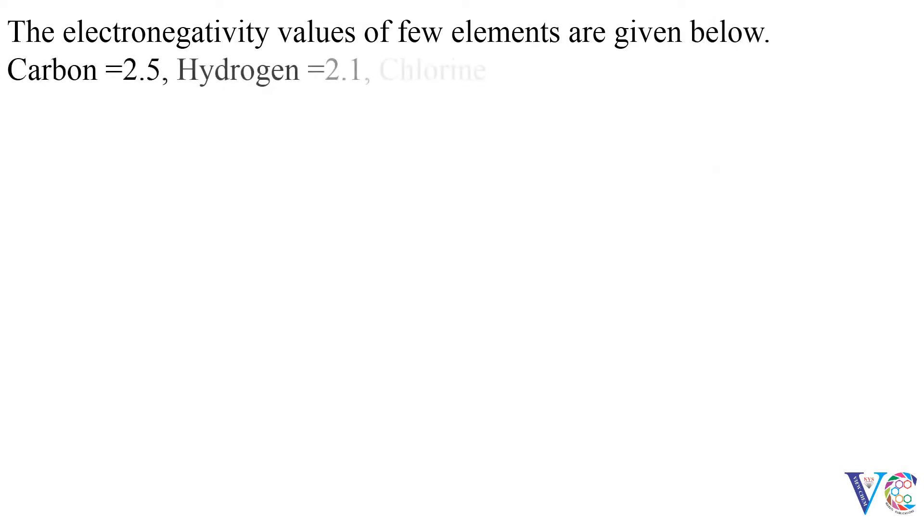The electronegativity values of few elements are given below. Carbon: 2.5, Hydrogen: 2.1, Chlorine: 3.0, Oxygen: 3.5, and Nitrogen: 3.0. Based on the difference in electronegativity values...